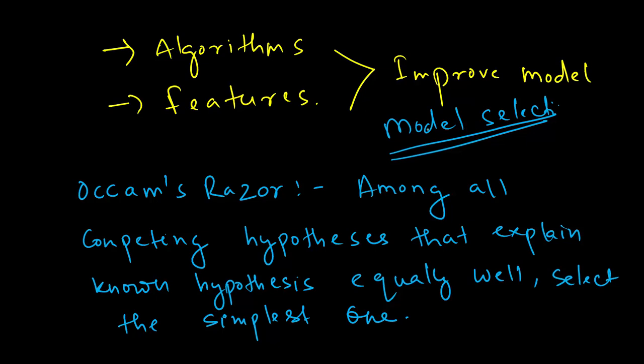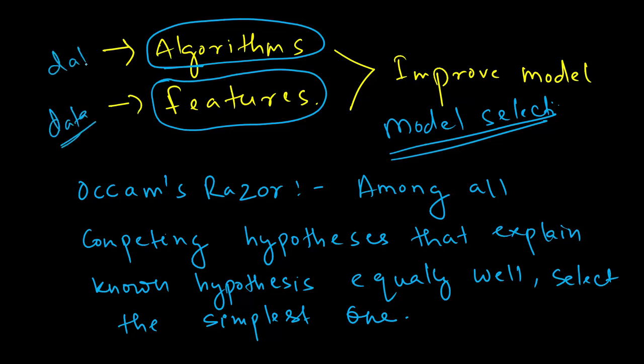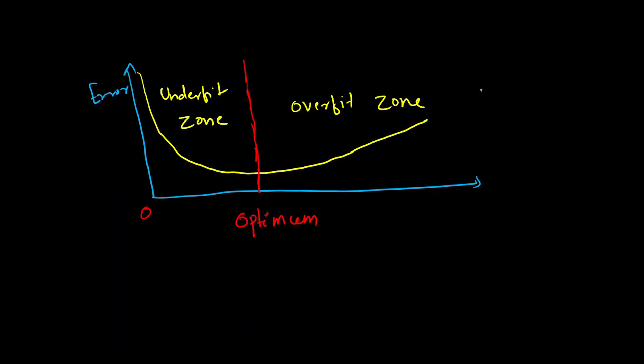And there are two ways to do it. We ensure that we play around with all types of algorithms, we explore all possible algorithms, and then we also play around with the features available to us. So data and algorithms available to us actually help us improve the model and select the best model.